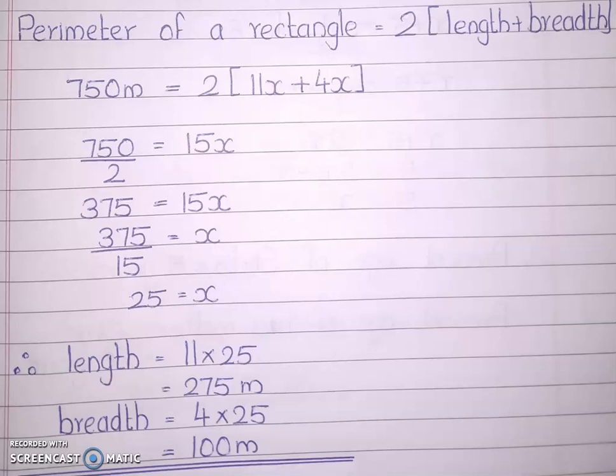Is x what is asked in your question? No. You need 11x and 4x. 11x is the length, 4x is the breadth. So 11 into 25 is 275 and 4 into 25 is 100. Length is 275 meters and breadth is 100 meters. By this we conclude exercise 2.4. The important questions are the age related problems, 2-digit expansion problems, and ratio problems.